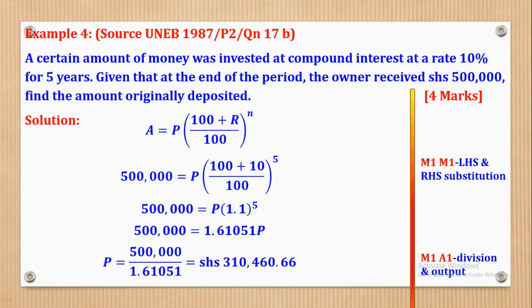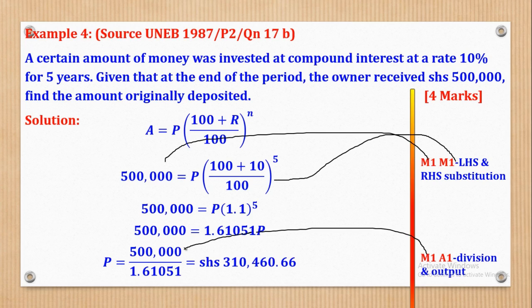For marking: M1 for substitution on the left-hand side, M1 for substitution on the right-hand side, M1 for the division, and A1 for the output.